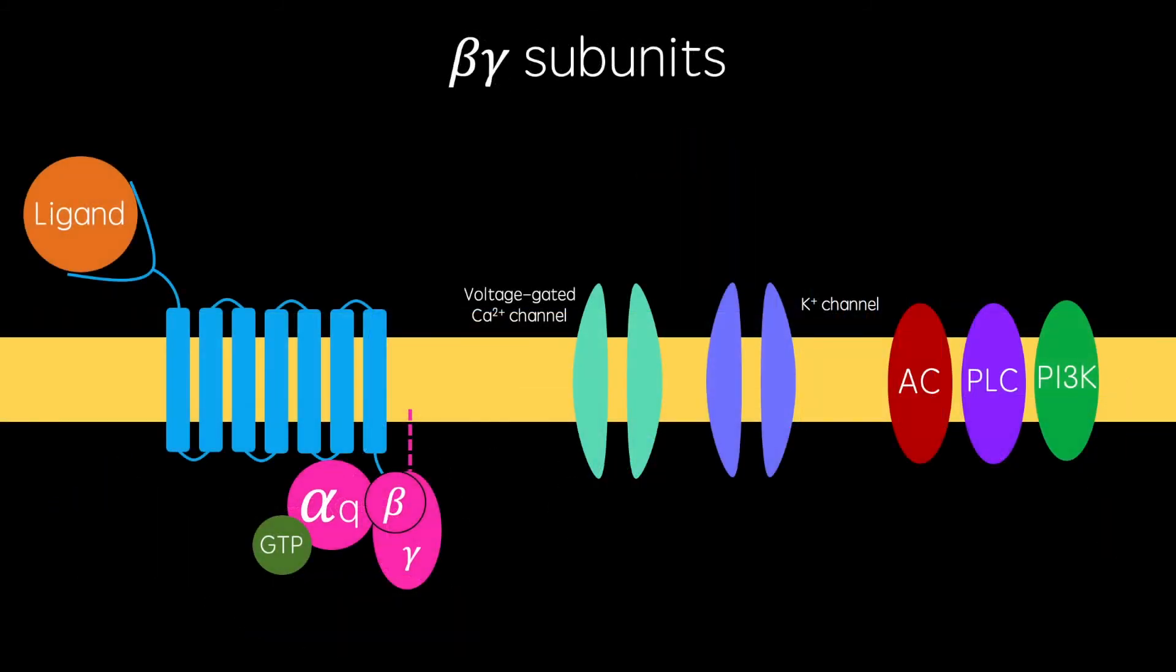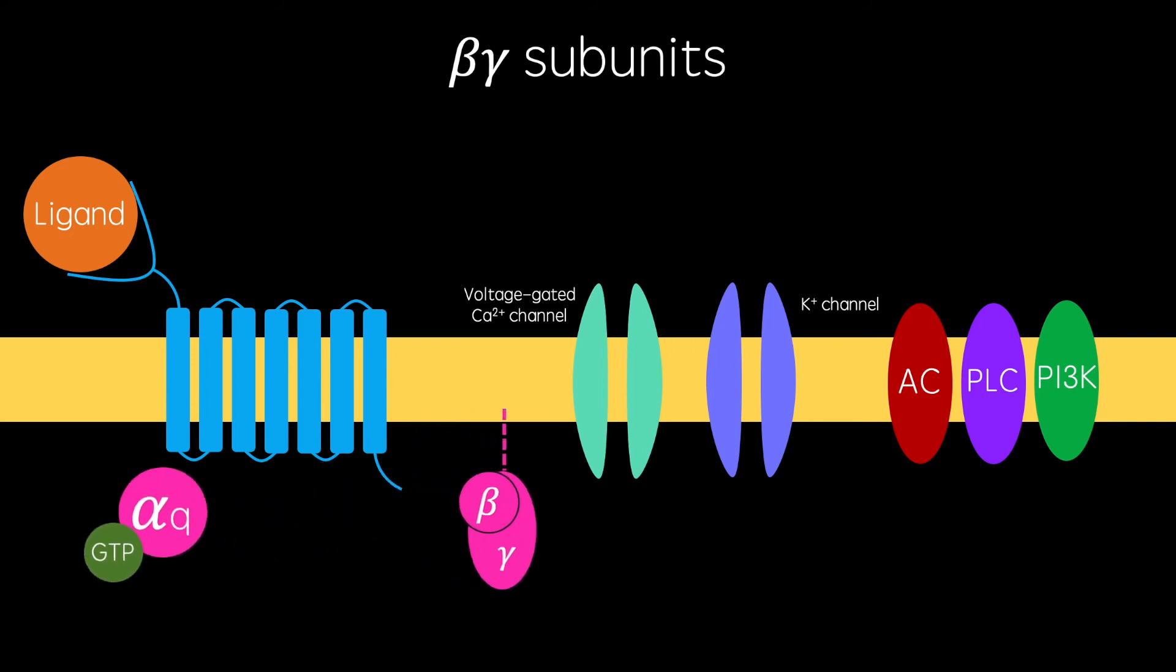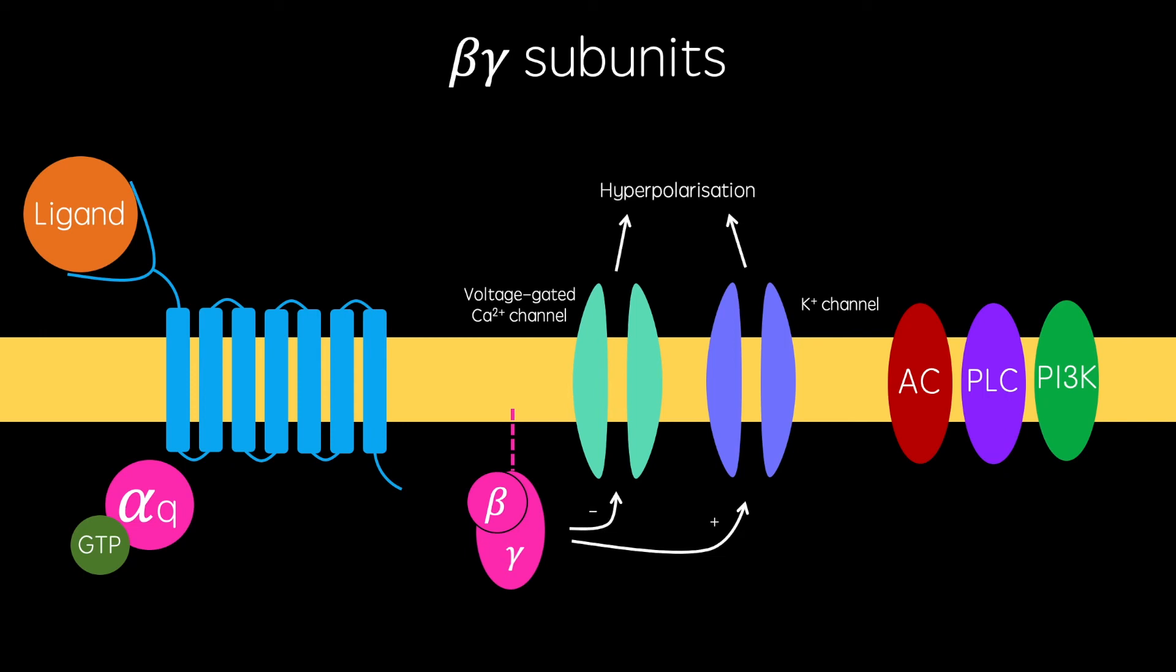However, the beta and gamma subunits often also have functions. For example, they can block voltage-gated calcium channels and open potassium channels leading to hyperpolarization. They can also activate adenylyl cyclase, phospholipase C, and PI3 kinase.